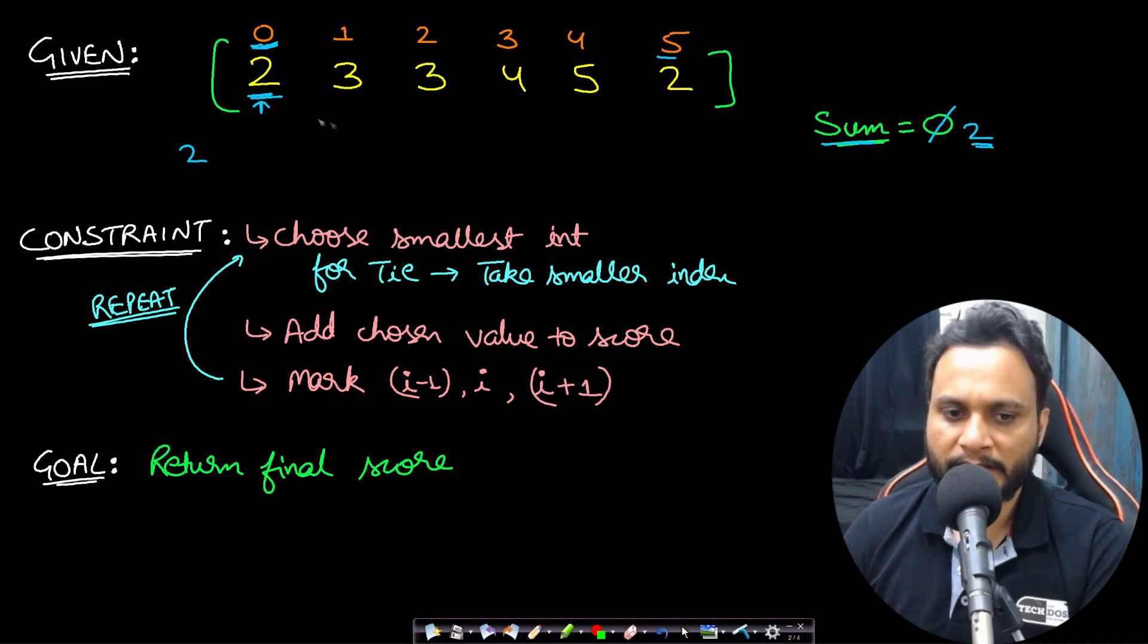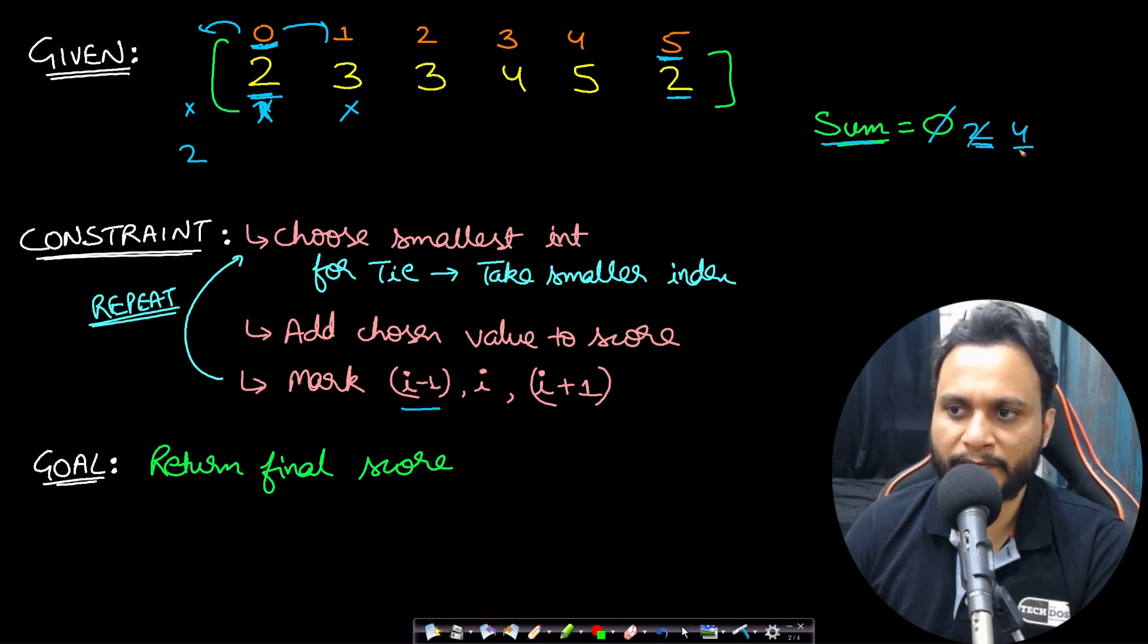And after picking this, after doing all this, you need to mark i-1th index, ith index and i+1th index as well. Marking the indices means they will not be chosen in future. Now we need to repeat this process unless all the array items are marked. So if you consider the next item to be chosen, it will be 5.